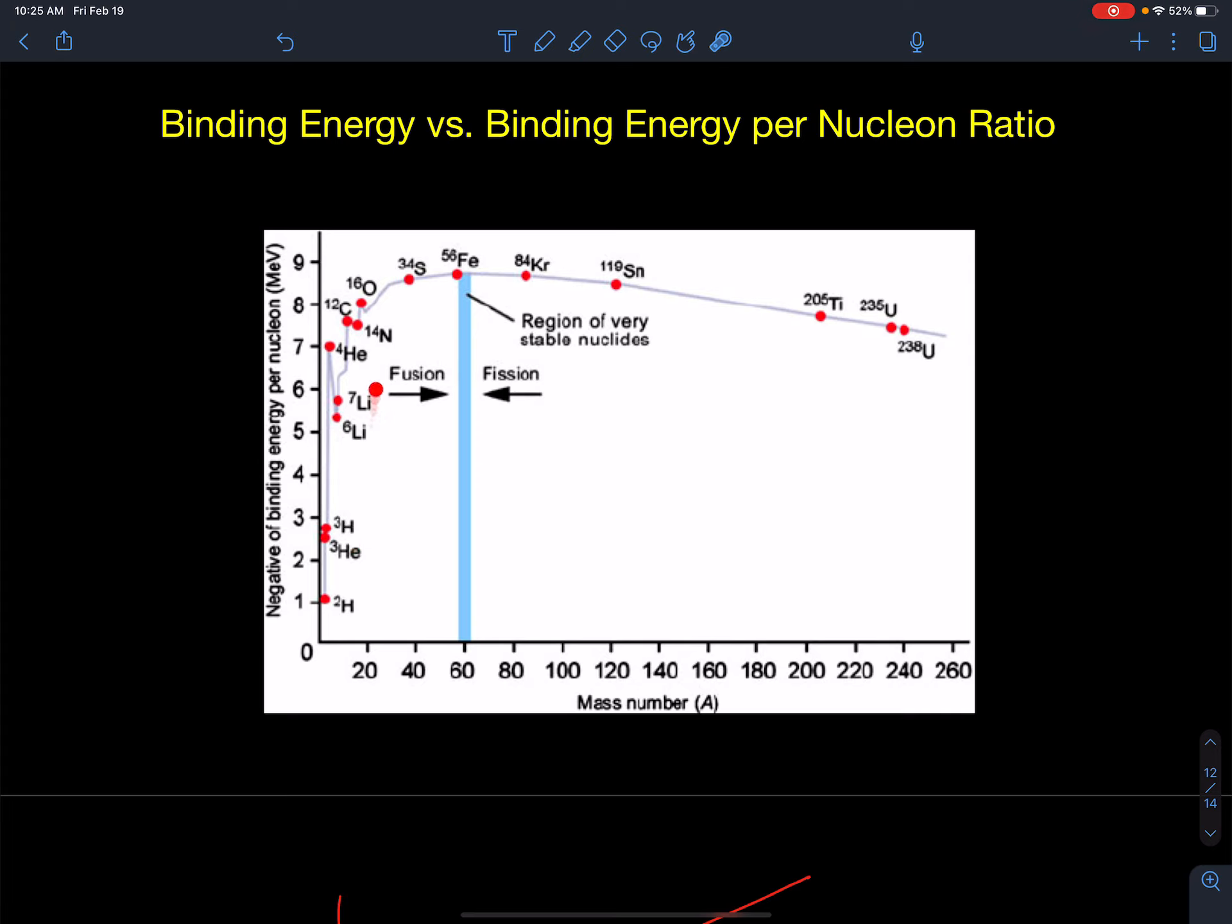So all these elements on this side of the periodic table, they want to keep adding nucleons so that they become as stable as iron. And then after I get past iron, these elements like uranium, they're not as stable as iron. They want to break apart slowly, undergo different nuclear decay reactions so that they can slowly increase the binding energy per nucleon.